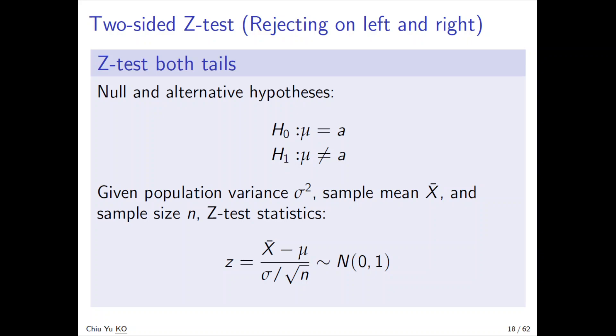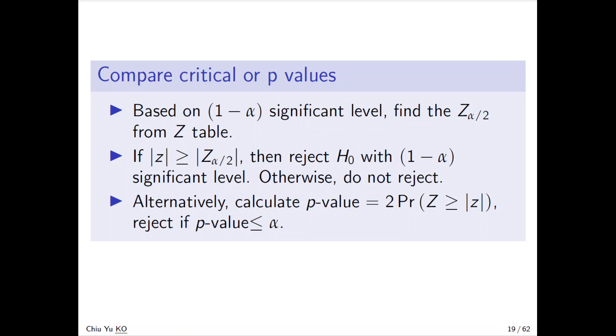So here we have critical value and p-value. First, based on the significance level one minus alpha, find Z alpha over two. Because you don't know which side, you spread the alpha on both sides. Turns out this is the best way to do it.